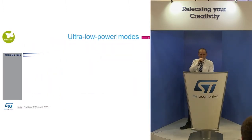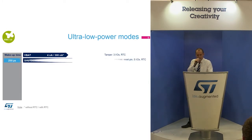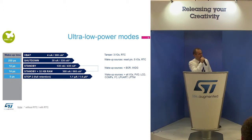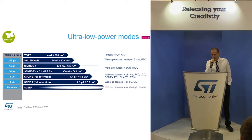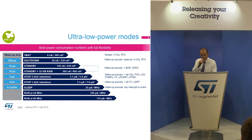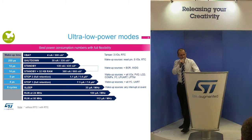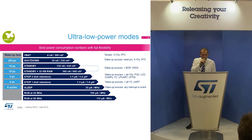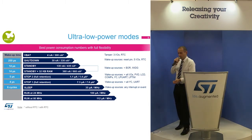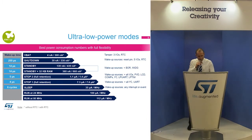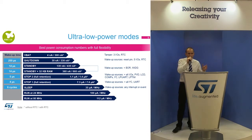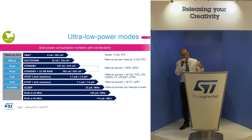Now let's look at the ultra low power modes available. We have VBAT at 4 nanoamps and 300 nanoamps with RTC. We have shutdown at 30 nanoamps and 300 nanoamps with RTC — wake-up sources are 5 IOs or RTC, and wake-up time is quite short at 250 microseconds. If you want a lower wake-up time, there is standby mode at 14 microseconds — and in this mode you can keep 32 kB of SRAM. Then there is stop 2 — power consumption is 1.1 microamps and you wake up in less than 5 microseconds.